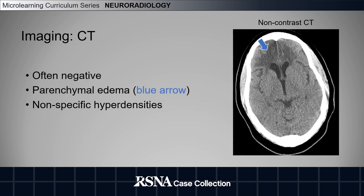Here we have a non-contrast CT of the head, which are often negative in patients with intracranial sarcoidosis, but you may see parenchymal edema as shown here, or nonspecific hyperdensities.